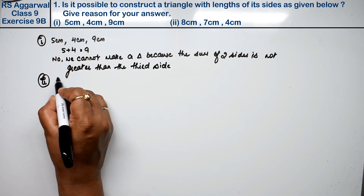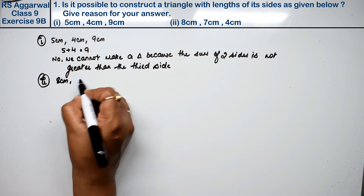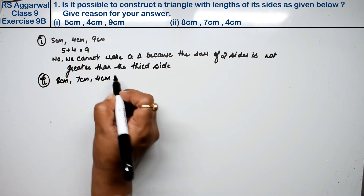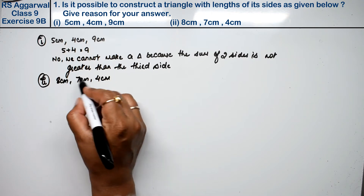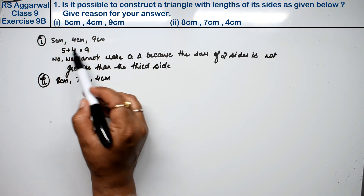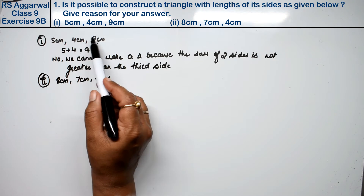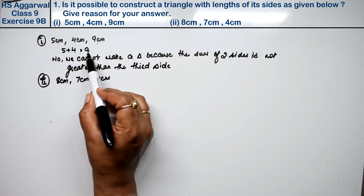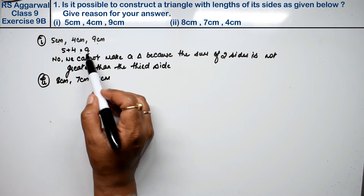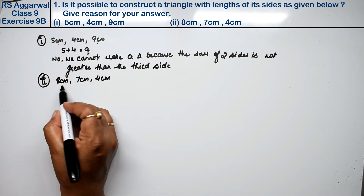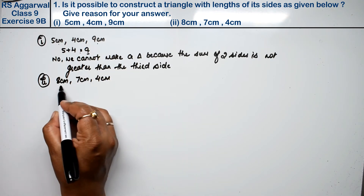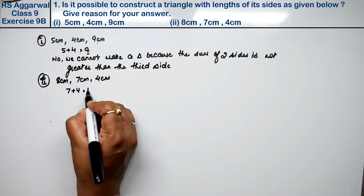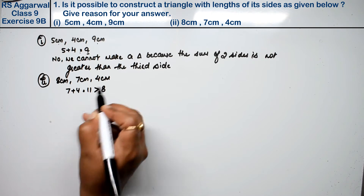In the second part, the sides given are 8 cm, 7 cm, and 4 cm. Let's check all three cases. First: 7 plus 4 equals 11, which is greater than 8.